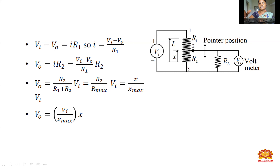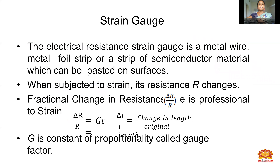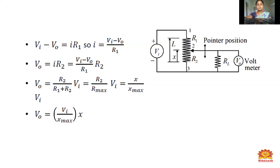Output voltage V0 equals R2 divided by (R1 plus R2) times Vi, which simplifies to R2 divided by R-max times Vi. Since R1 plus R2 equals R-max, we get V0 equals Vi times X divided by X-max. This is how to calculate the output voltage of a simple potentiometer.